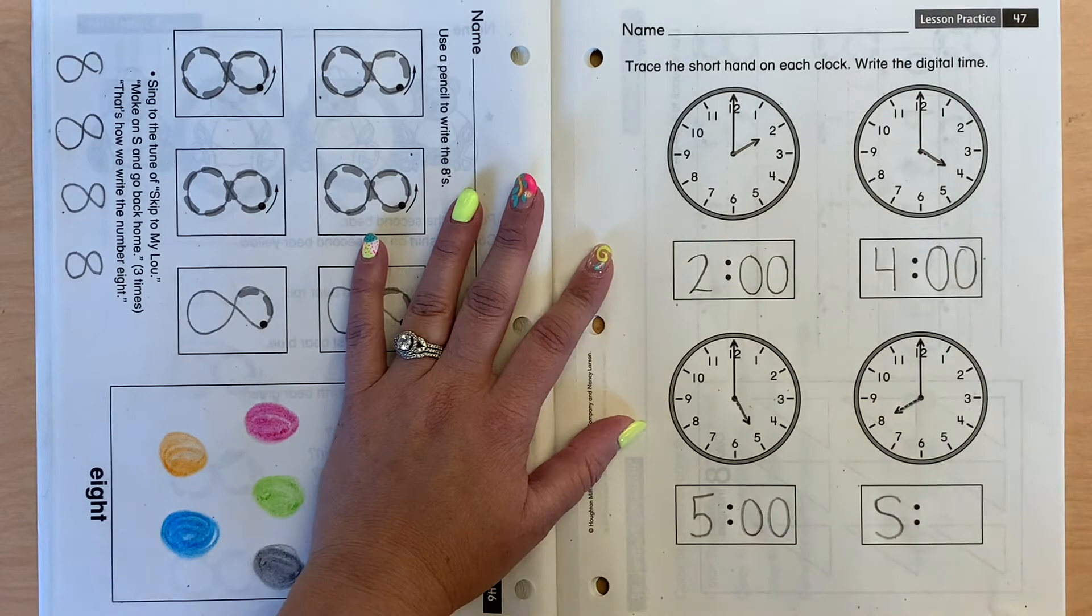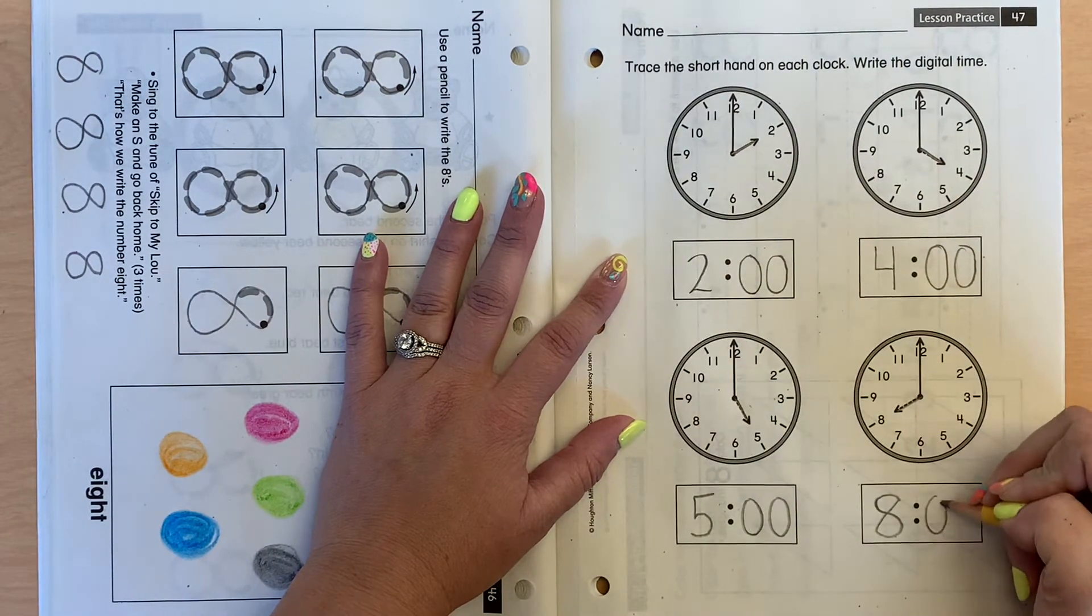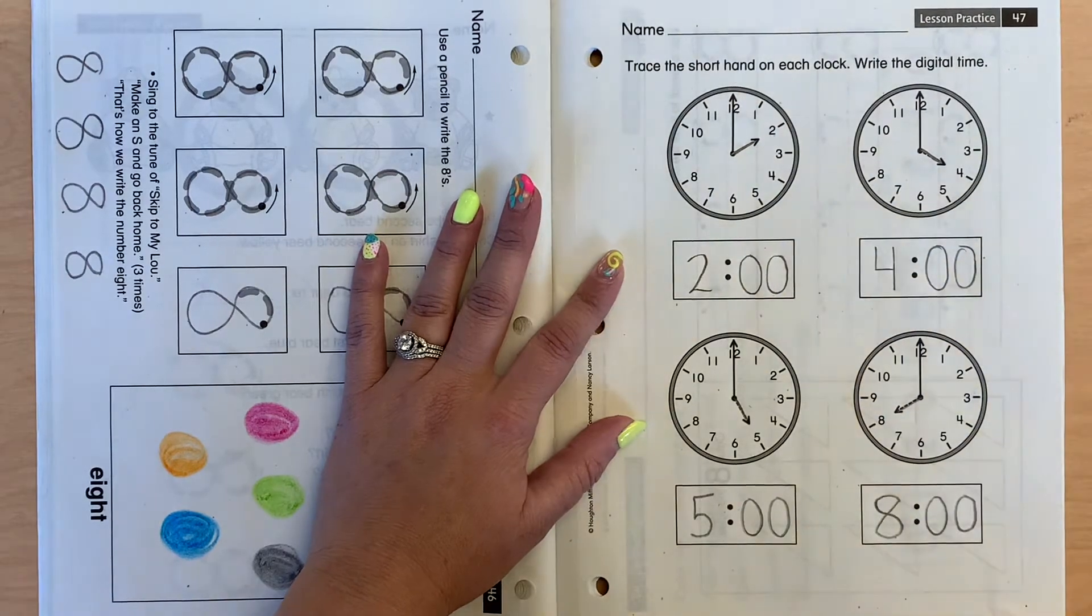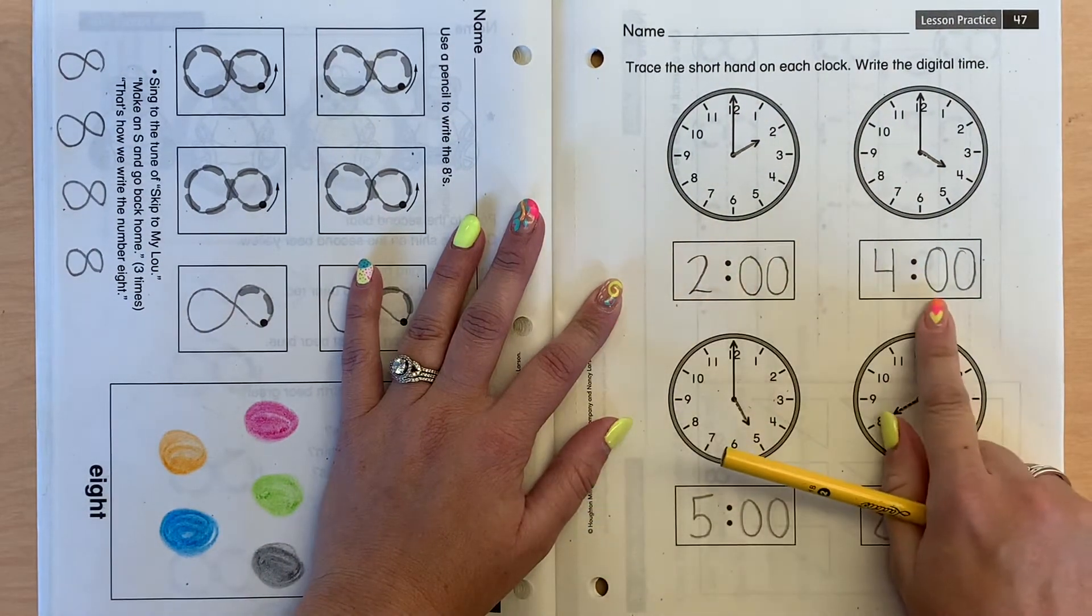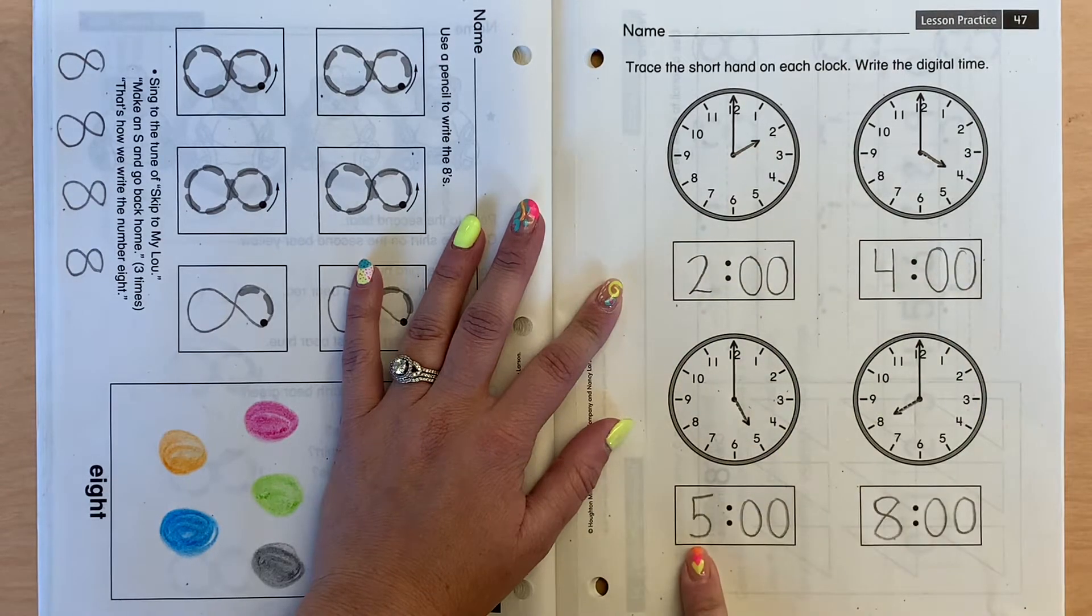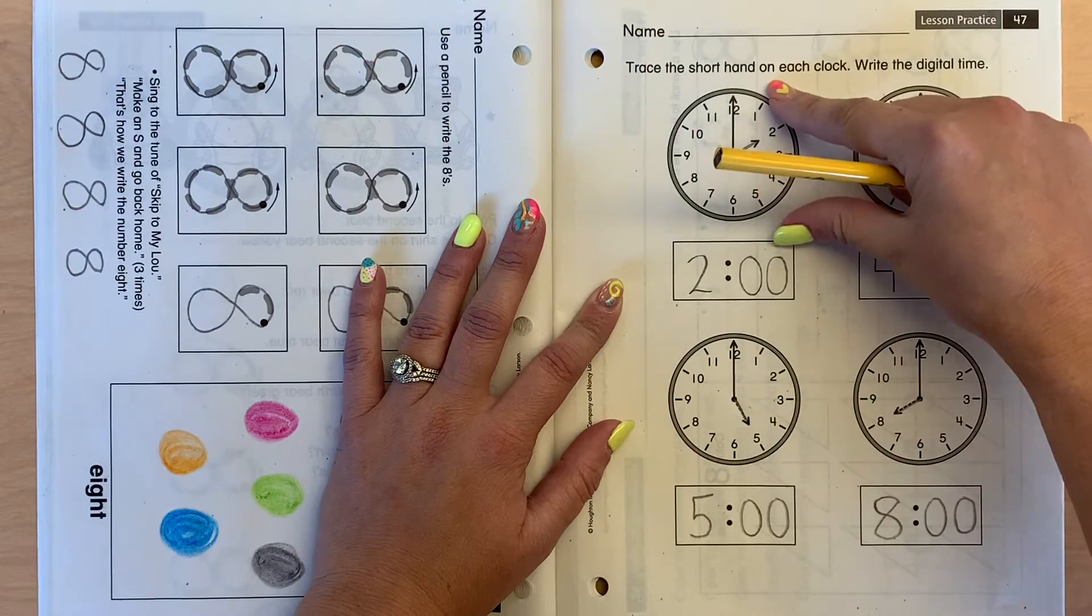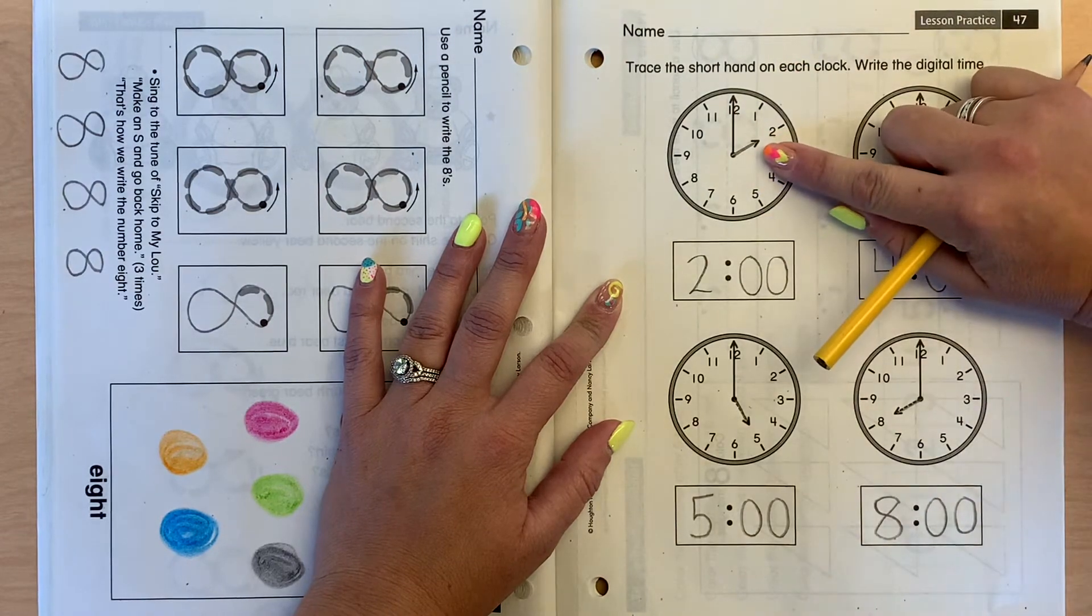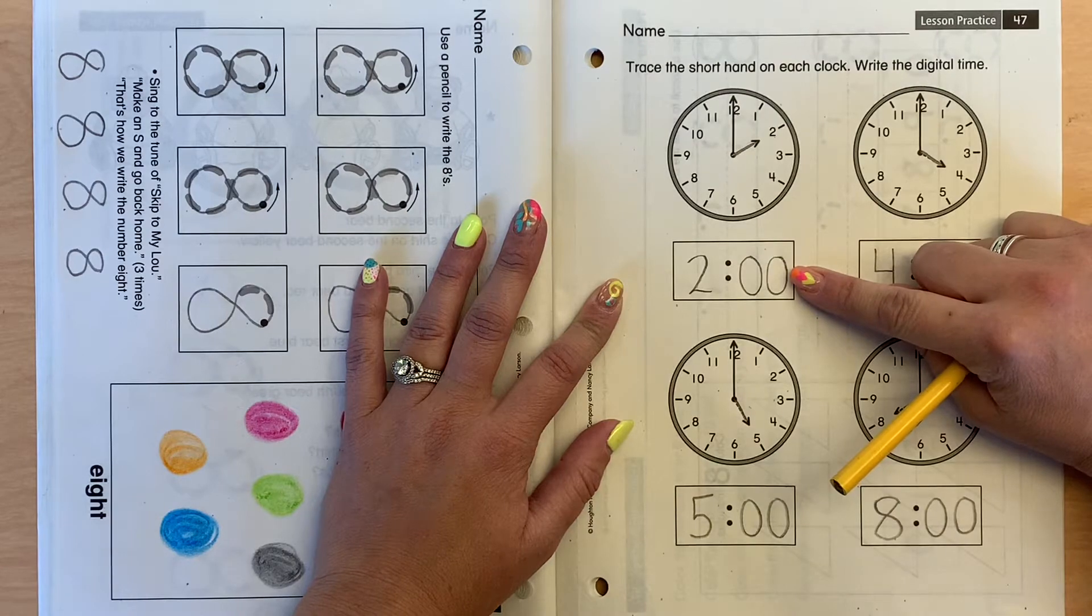Remember in 8, we make an S, see that, and then we connect it back, o'clock. Easy peasy, so we wrote 2 o'clock, 4 o'clock, 5 o'clock, 8 o'clock. We're showing the time as an analog clock, which is a circle clock. We're showing the time as a digital clock.